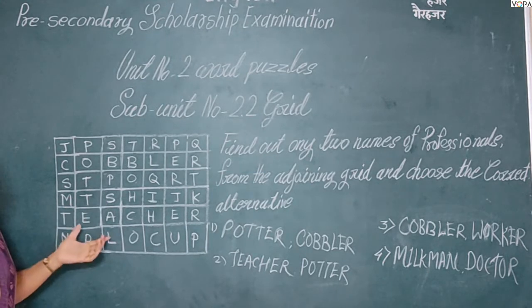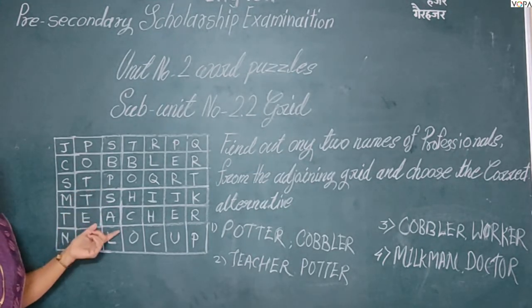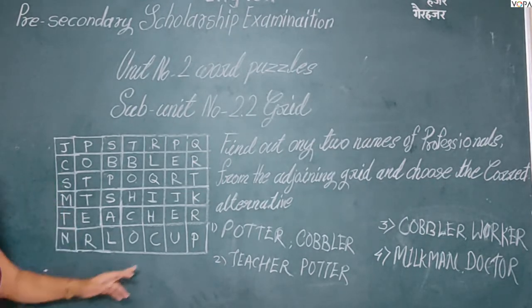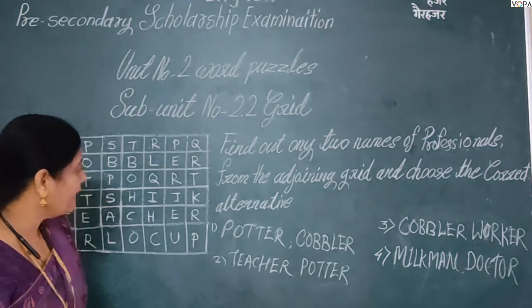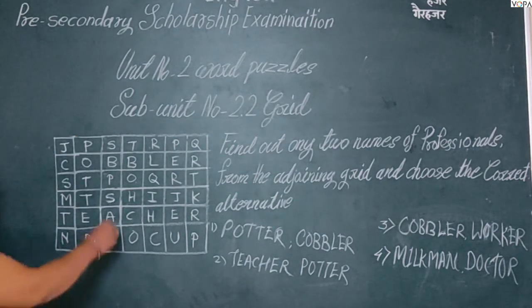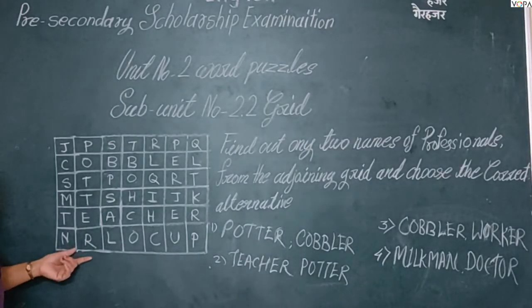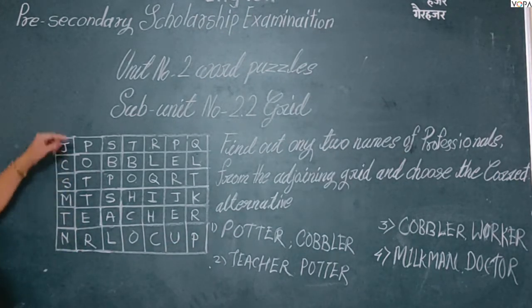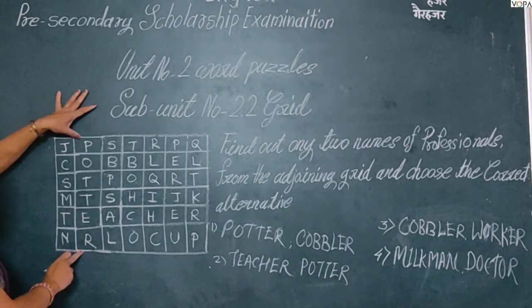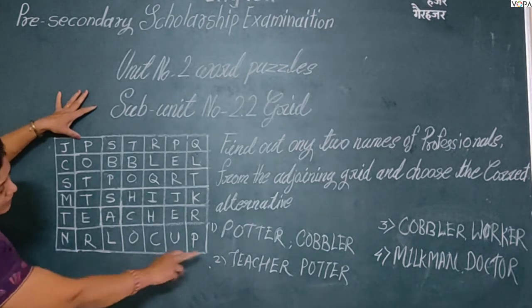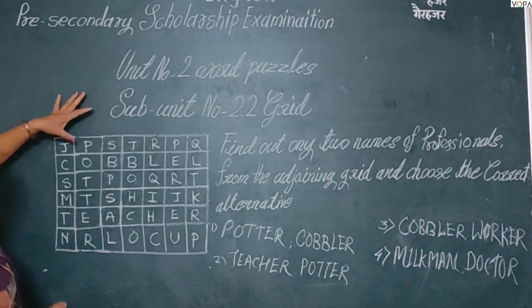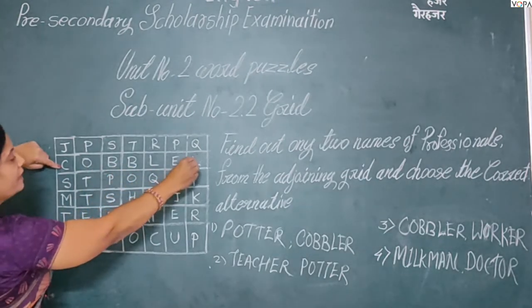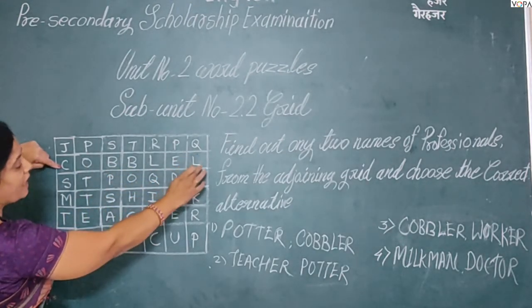In this grid there are names of professionals. Look at the first option: potter and potter. Looking at the word 'potter' — the second name 'potter' seems to be missing the letter R in the grid, so the first option does not appear to be correct.